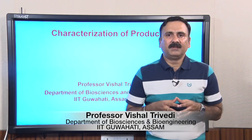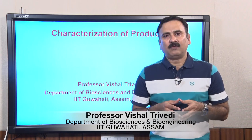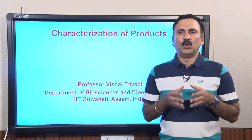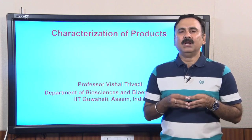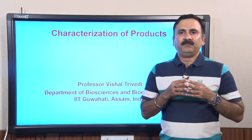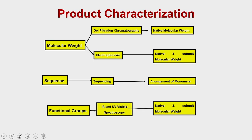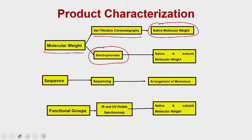In this module we were discussing about the characterization of the overexpressed products which you are getting from the host cells. So far we have discussed about the identification or determination of the molecular weight — how to determine the molecular weight of the isolated product, either by gel filtration chromatography which gives native molecular weight, or by electrophoresis which gives native as well as subunit molecular weight.